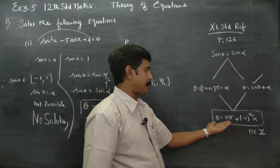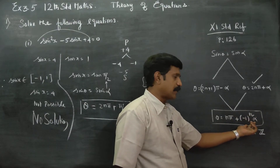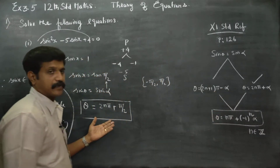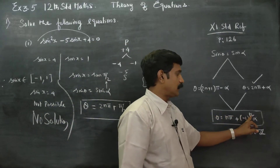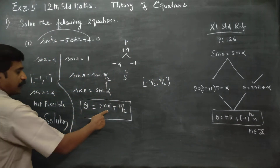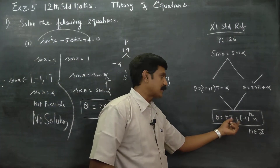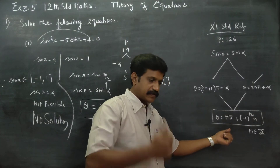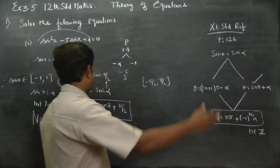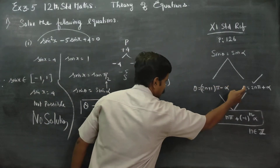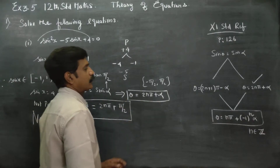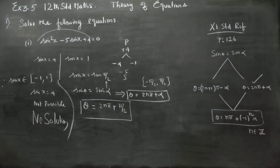Using the formula: n pi plus (minus 1)^n into alpha, with alpha = pi by 2. For even n, the answer simplifies to theta equals 2n pi plus pi by 2. The book answer style is theta equals 2n pi plus pi by 2. Please refer to page 126 in your 11th standard book for this formula. This is the answer for the first subdivision.